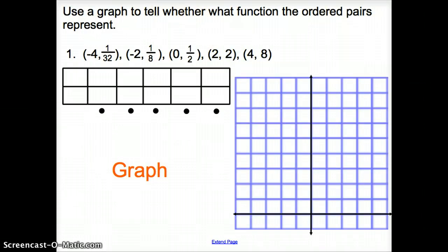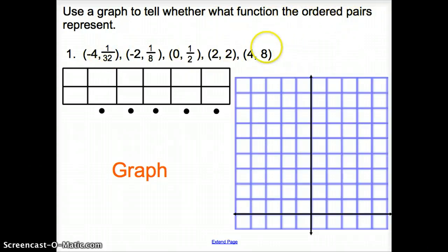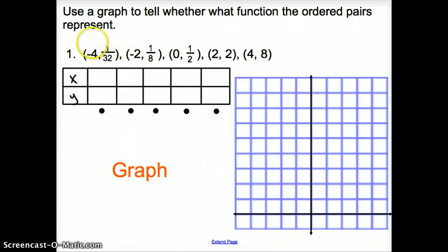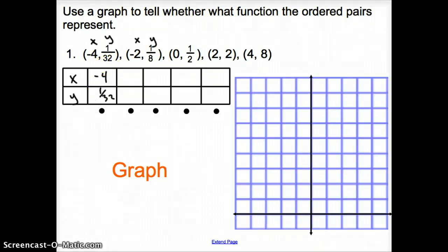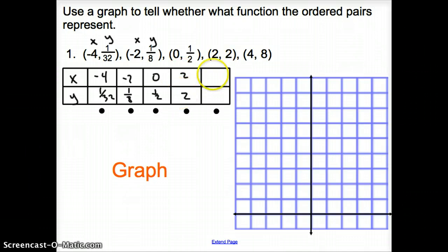So what do these problems look like? In number one, we're going to use the graph to tell what function the ordered pairs represent. Here are our ordered pairs, and we're going to start by putting them in an xy table. The first coordinate is your x, the second coordinate is your y. So we have: negative 4 and 1/32, negative 2 and 1/8, 0 and 1/2, 2 and 2, 4 and 8.